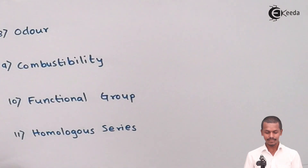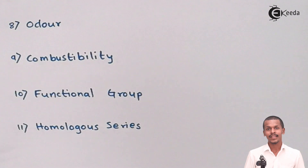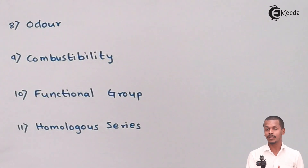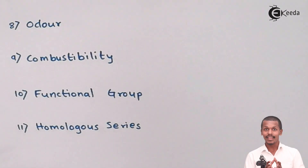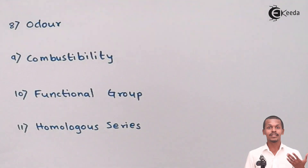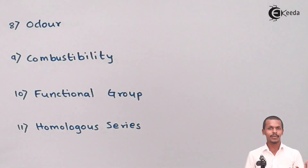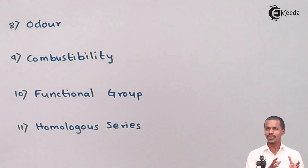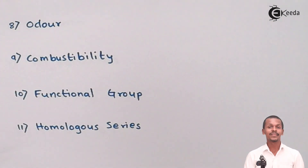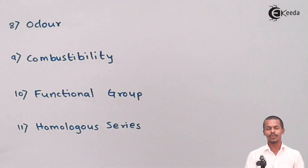Next is Odour — that is, smell. Some organic compounds have a very sweet and pleasant smell, which can help identify them. For example, acetone has a characteristic sweet smell by which we can identify it. A special characteristic smell is present for particular organic compounds and can be used for detection.